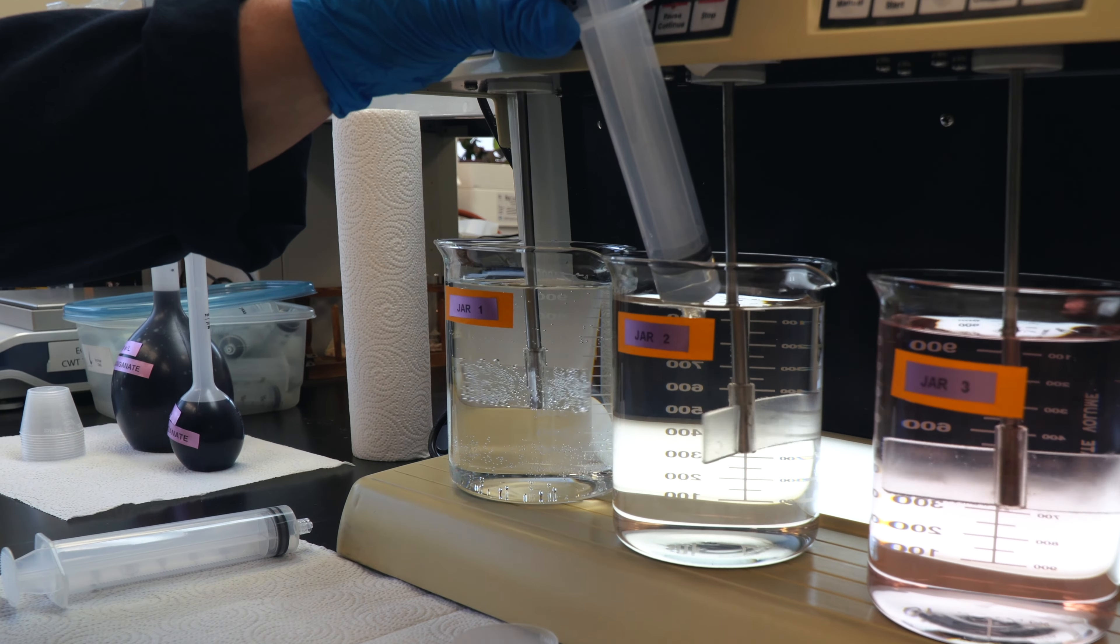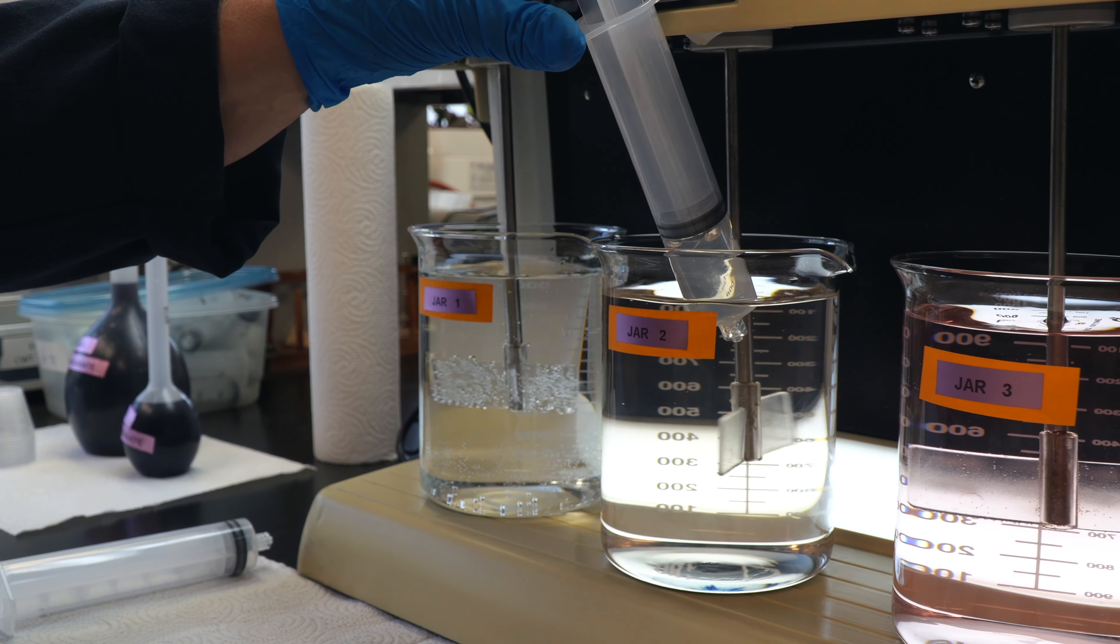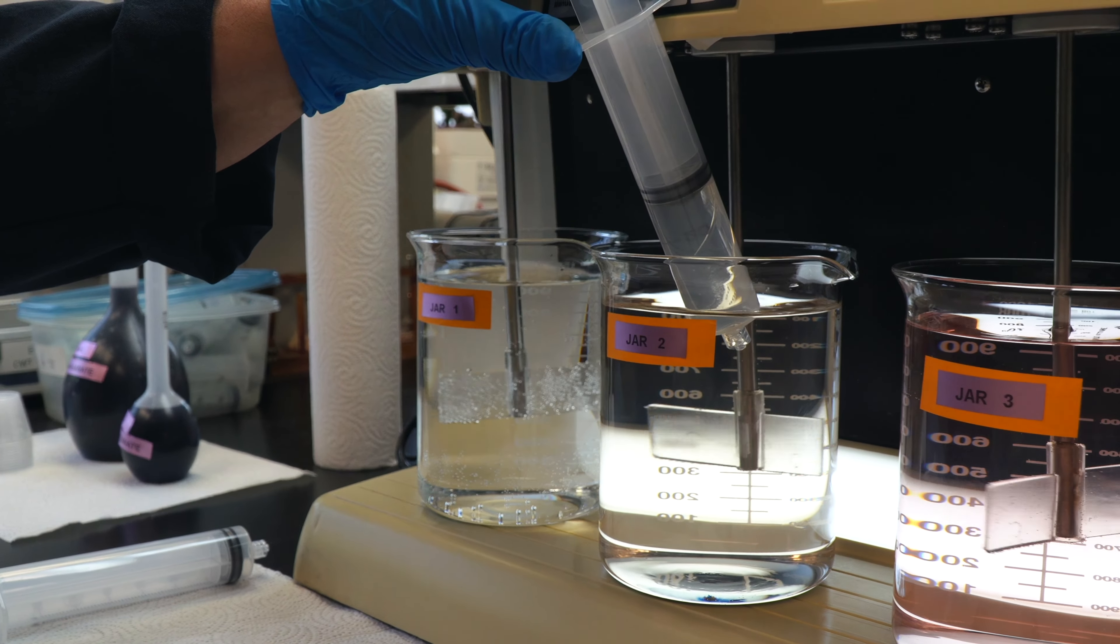Obtain a sample of the plant's water that has been treated with Kerox potassium permanganate. Filter this sample through a 0.22 micron filter.